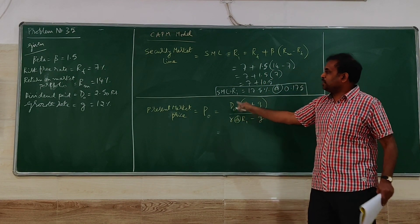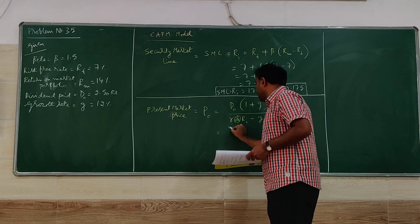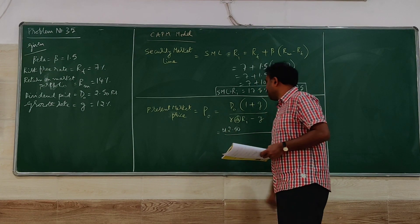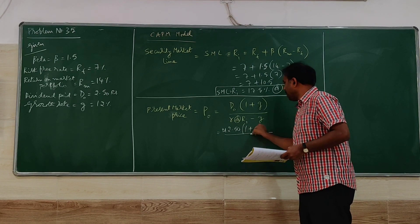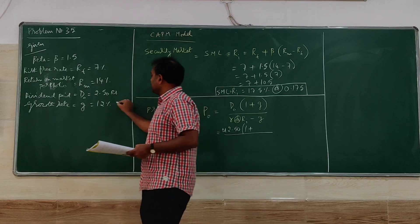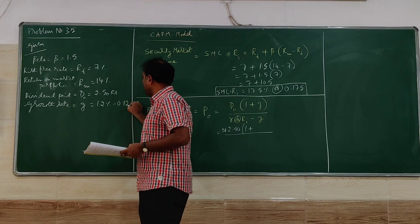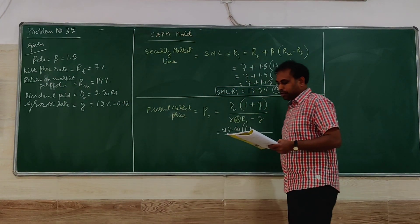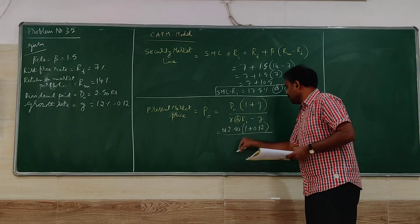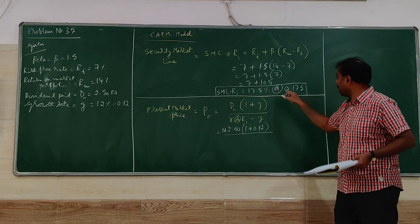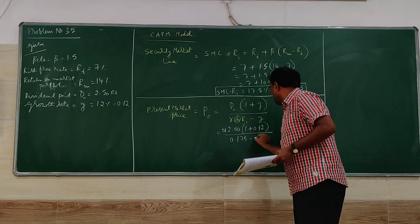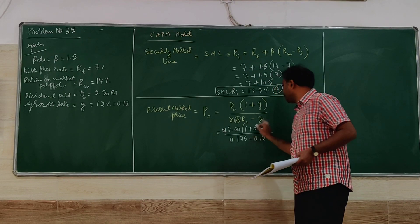So I have here D0. As I told, this is based on dividend theory. 2.5 into (1 plus G). G is given as 12%. I can simplify this into 0.12. For the calculation, it becomes easier. Divided by RI. RI is 0.175 minus 0.12 again G.